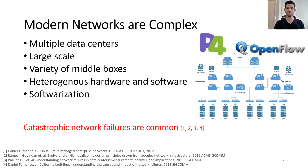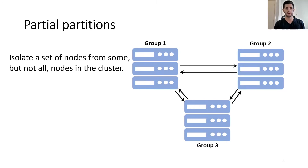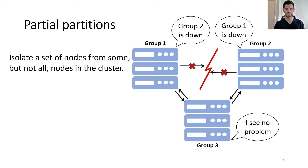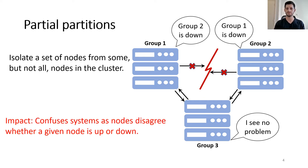With all of that, systems deployed on top of these networks are still expected to tolerate all kinds of failures. In our study, we focus on a specific kind of failures called partial network partitions. A partial partition disrupts the communication between some nodes but not all nodes in the system. For example, here we show three groups of nodes. In the normal case, all nodes would be able to communicate freely. However, if there is a partial partition between group one and group two, then nodes in these two groups will not be able to communicate with each other, whereas nodes in group three will be able to communicate with other nodes in the system. This is confusing for systems because nodes disagree whether a certain node or service is up or down.